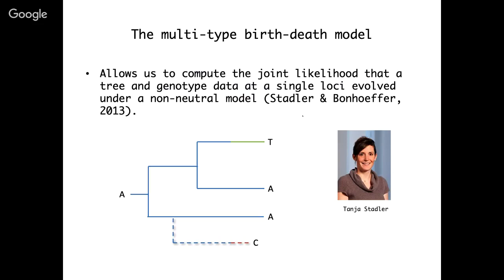One way we could start to do this is with so-called multi-type birth-death models. Birth-death models have a long history in mathematical biology going back to at least the 1940s. But it was really the work of Tania Stadler at ETH Zurich in the past decade or so that allowed these multi-type birth-death models to be applied to the situations we commonly deal with in phylogenetics, where we have incomplete phylogenetic trees because we haven't necessarily sampled all taxa in a population.